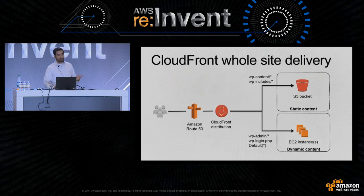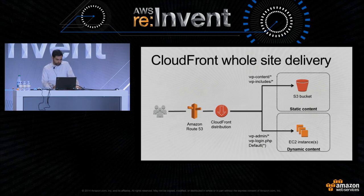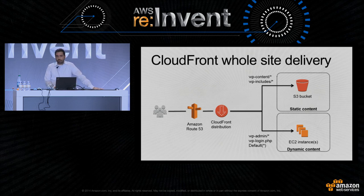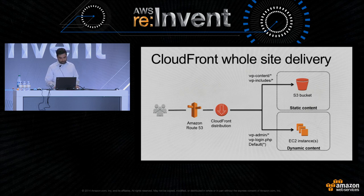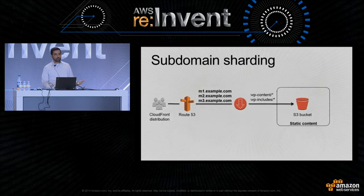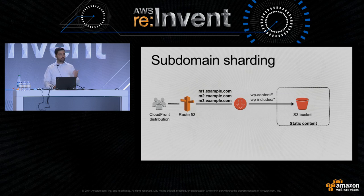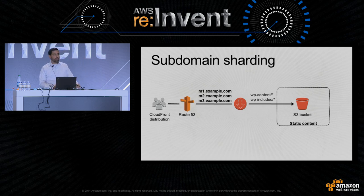Amazon CloudFront can serve cacheable and also non-cacheable content. The benefit is larger for cacheable content, but for non-cacheable content CloudFront performs network-level optimizations to deliver content more quickly. We want to serve the whole website through CloudFront. CloudFront can have multiple origins — in this case, an S3 bucket for static content and an EC2 instance for dynamic content. We configure different rules called CloudFront behaviors, where each behavior depends on a specific path pattern and dictates where to fetch a particular object from, and also how to treat cookies and HTTP headers.